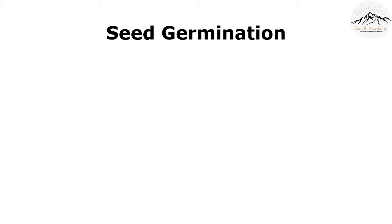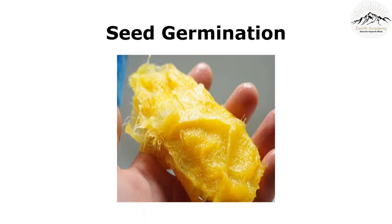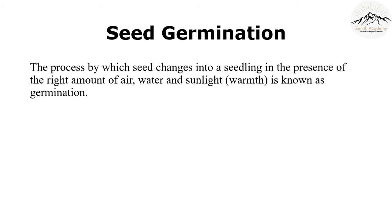How many times have you noticed a seed and wondered if you can grow a plant with it? During summer we enjoy mangoes, but we usually throw the seeds. What if we learn to grow mangoes with seeds? This can be achieved with the help of a process known as seed germination. The process by which a seed changes into a seedling in the presence of the right amount of air, water and sunlight is known as germination.